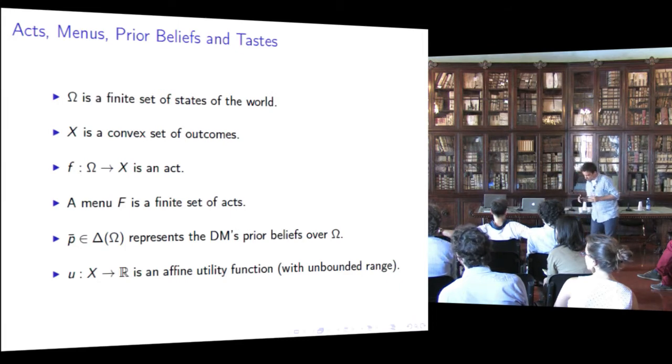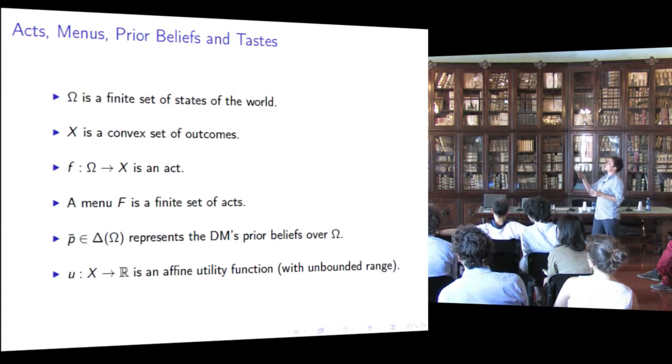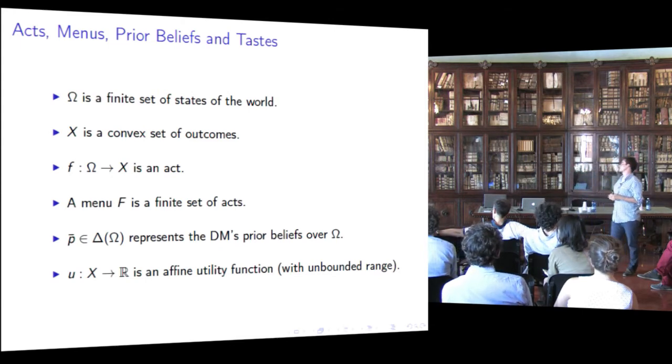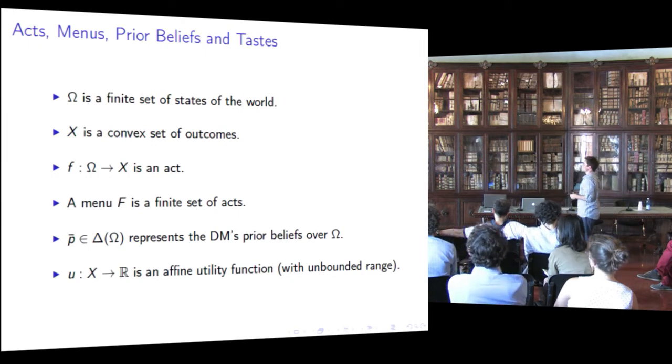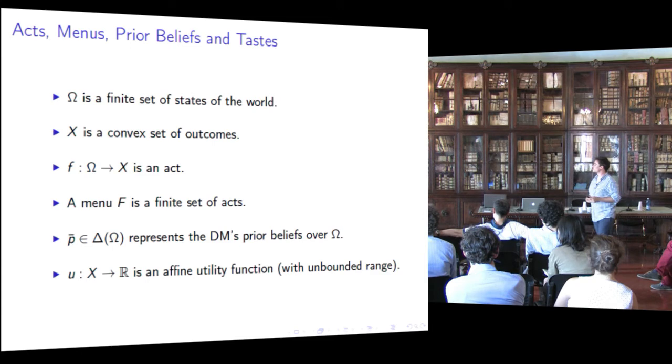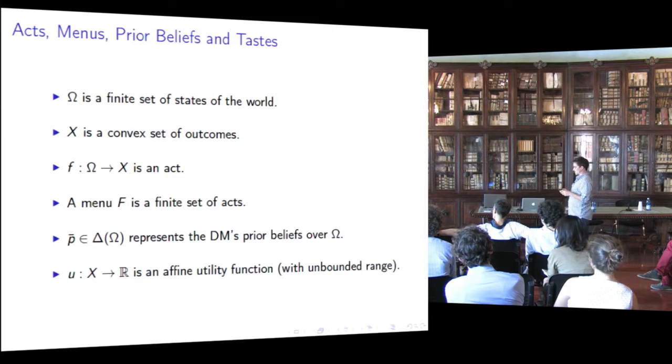The DM, before allocating attention, holds some prior beliefs about the state of the world, which are represented by a probability measure p-bar over omega. Moreover, there is also an affine utility function u, mapping outcomes into real numbers, representing the DM's taste of outcomes. You can think of the last two objects as the subjective object, while the menus are the exogenous object.